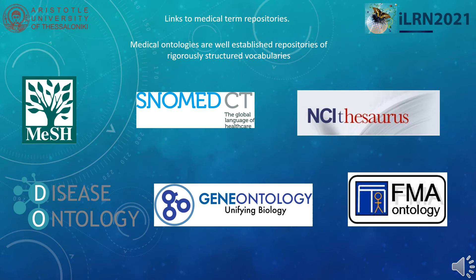Medical ontologies are well-established repositories of rigorously structured vocabularies that describe interlinked medical terms. For example, you might have the liver described with a formal definition, but that is not all — links to other terms such as parts of the liver would denote a relationship of general to specific, or a superset-subset relationship in other cases. This kind of logic and the extended nature of medical knowledge has spawned a lot of medical ontology vocabularies.